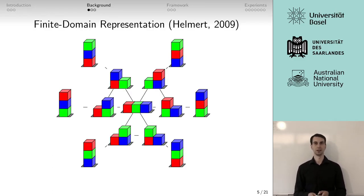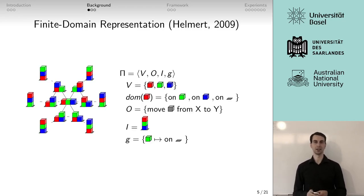Our planning tasks are defined in the finite domain representation, which means we have a finite set of variables, and each variable has a finite set of values, and those variables and values define the states of our state space, and we have some operators which define the transition in between.